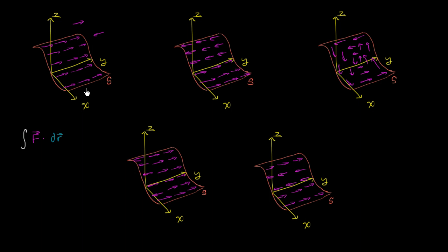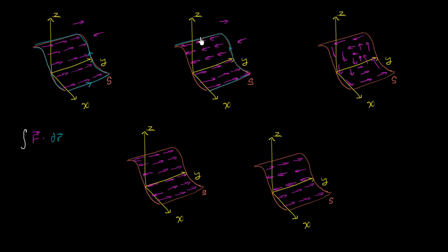The vector field could be defined in this entire three-dimensional space as well. These are obviously different vector fields, as we can see visually. The contour we care about is the counterclockwise boundary of our surface — we're going to take f dot dr along that path. So we're going to do this for every one of these surfaces and every one of these f's, and think about how the value of f dot dr over that contour might change from example to example.